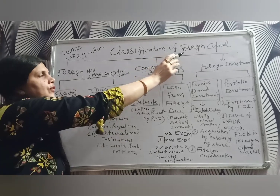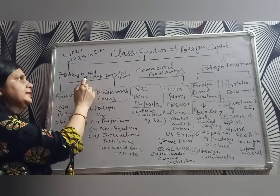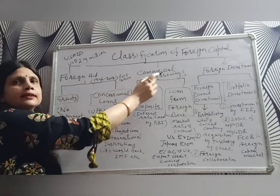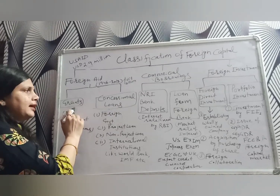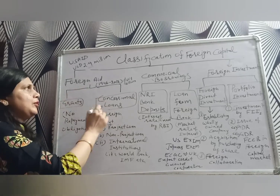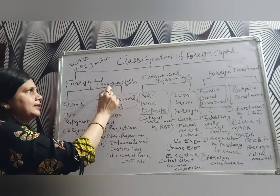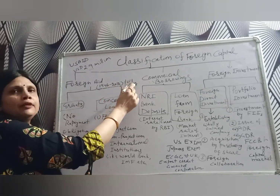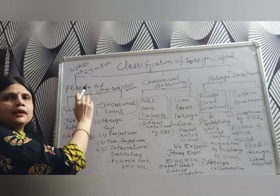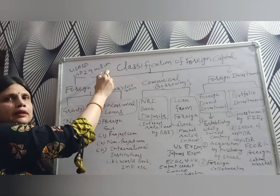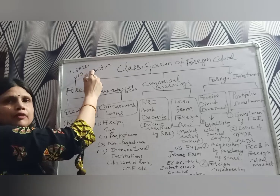The next topic is the classification of foreign capital. Foreign capital comes into India through many ways: foreign aid, commercial borrowings, and foreign investment. Foreign aid includes grants and concessional loans. In total, India received foreign aid from the US worth 65.1 billion dollars between 1946 and 2012. Recently in April, India received 2.9 million dollars from the United States Agency for International Development.